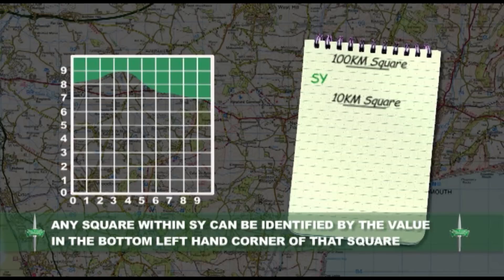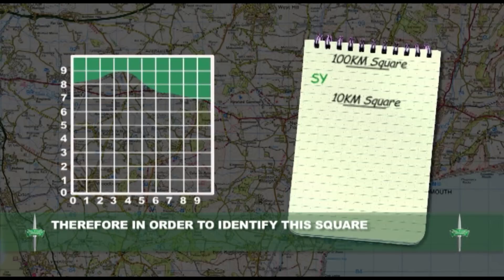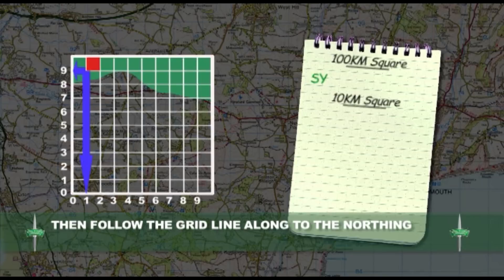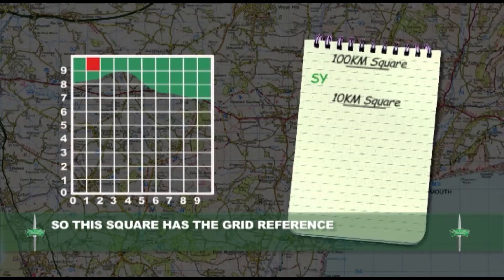Any square within SY can be identified by reading off the value relating to the bottom left-hand corner of that square. Follow the grid line down to read off the Easting — in this case, 1. Then follow the grid line to the Northing — it is 9. We've identified that this square has the grid reference SY19.